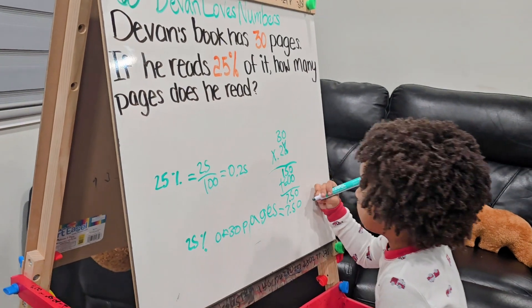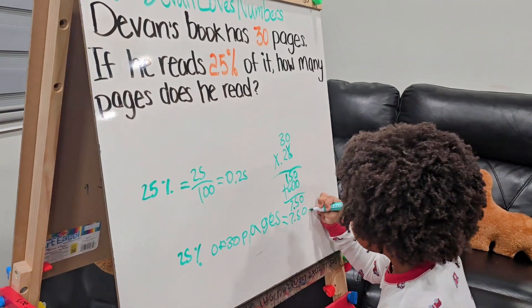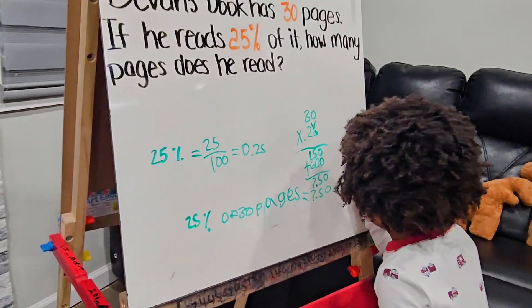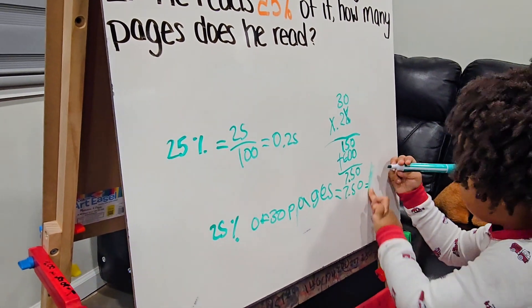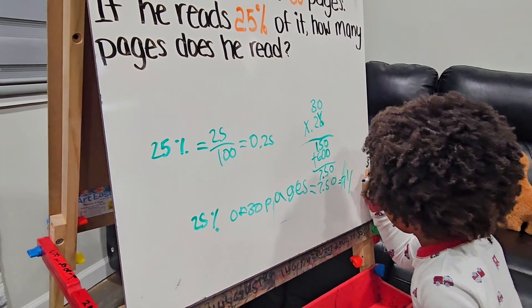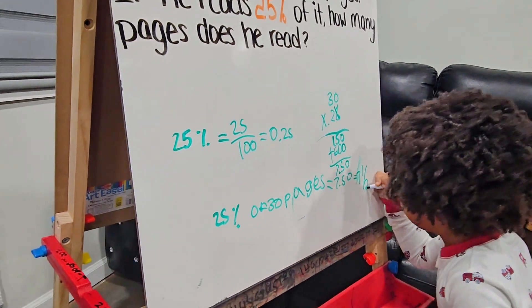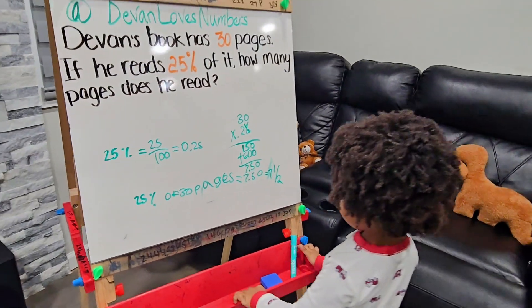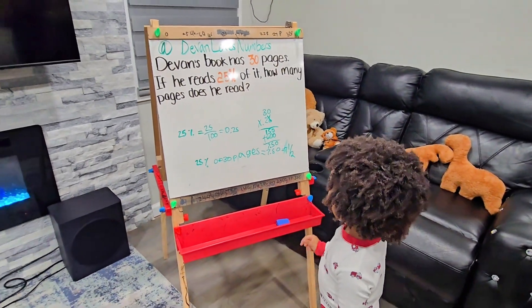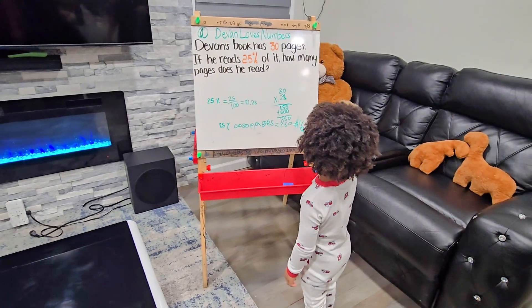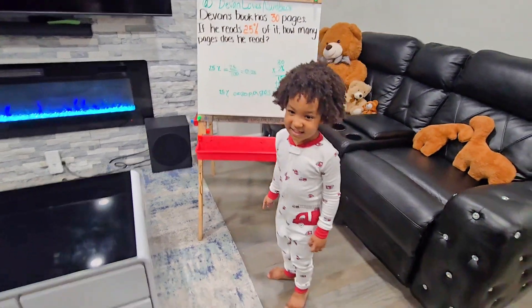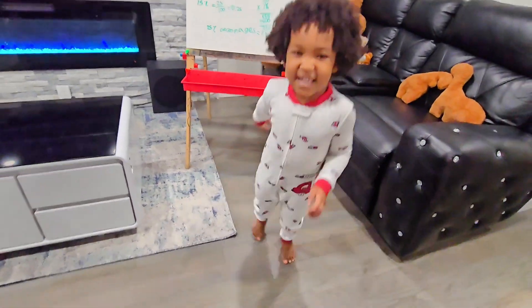2.50 equals seven and a half. I read seven and a half pages. Good job!